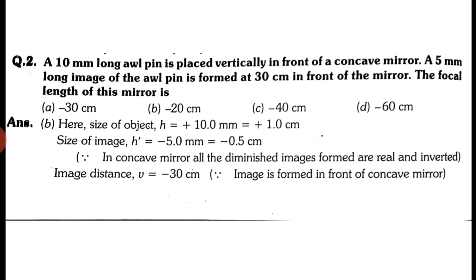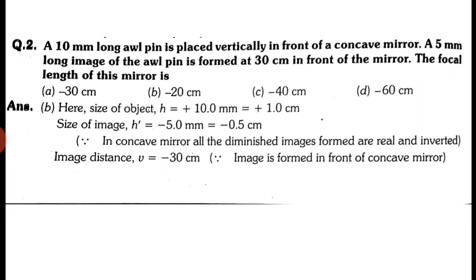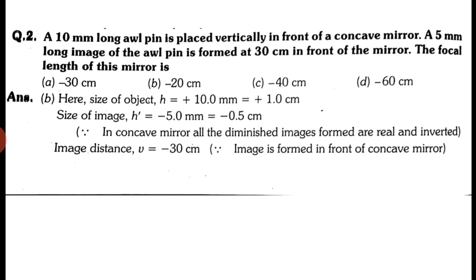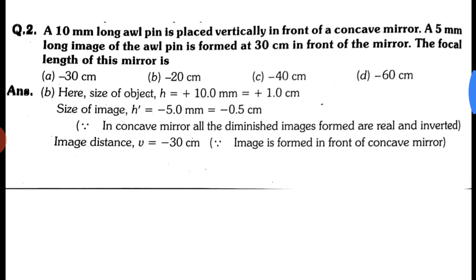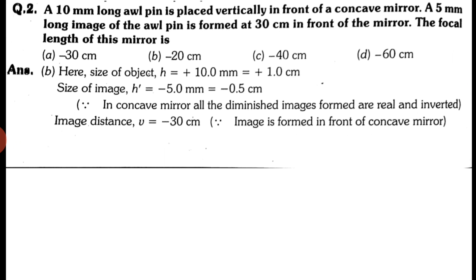A 5 mm long image of the all-pin is formed. So h-dash is given as 5 mm. Now, is it positive or negative? In a concave mirror, when a small image is formed it is inverted, so h-dash equals minus 5 mm. Also, v is given as minus 30 cm. The question asks: find the focal length of the mirror.